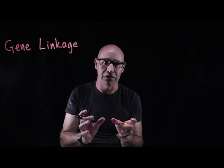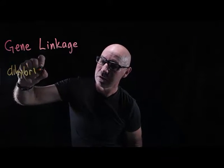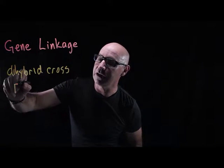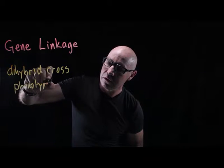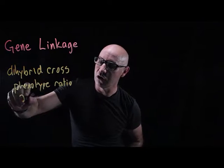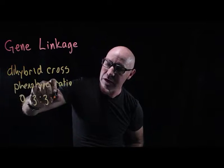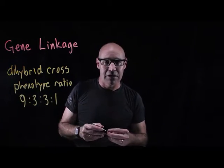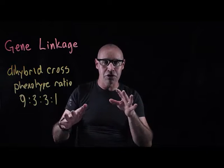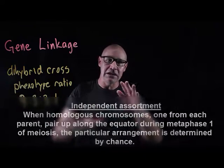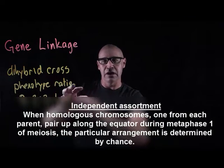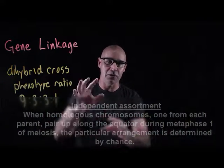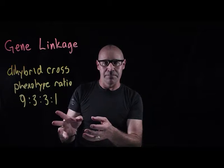We've previously seen that when we do a di-hybrid cross with genes that aren't linked, we get this ratio — the phenotype ratio was 9, 3, 3, 1. However, that is if the genes are on different chromosomes and there's independent assortment, so the genes are totally independent of each other when they sort. In linked genes, they're on the same chromosome.